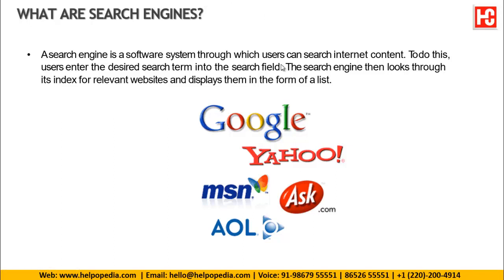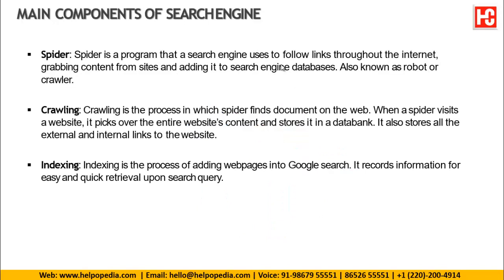How does a search engine work? We should know this because, say if I want to drive a vehicle, I first need to learn how to drive it. Similarly, if I know how a search engine works, it is easier for me to get my website into search engine. There are certain components of search engines. The first one is a spider. Spiders are programs that search engines use to follow links throughout the internet, grabbing content from websites and adding it to the search engine database. Spiders are also called robots or crawlers.